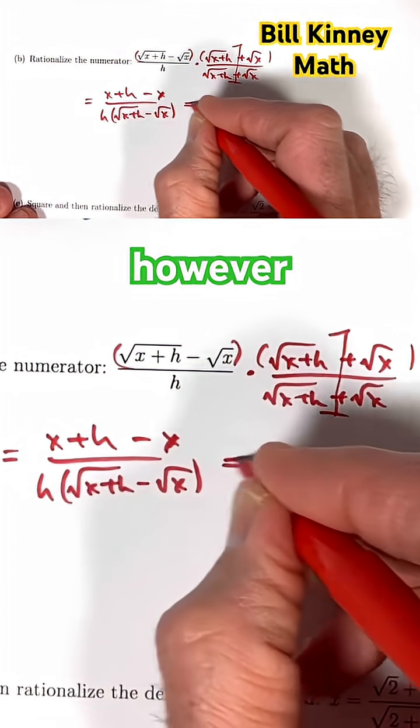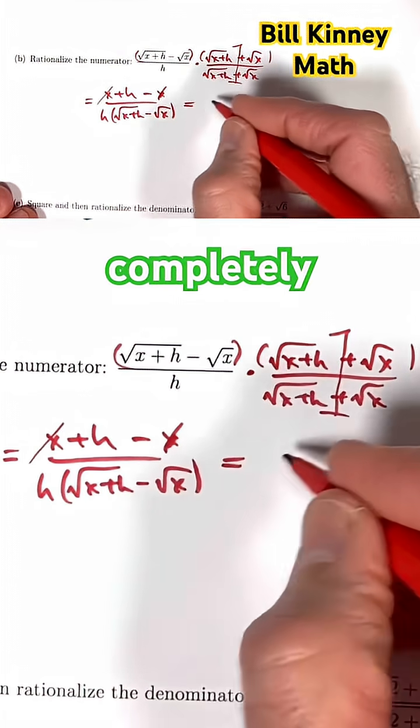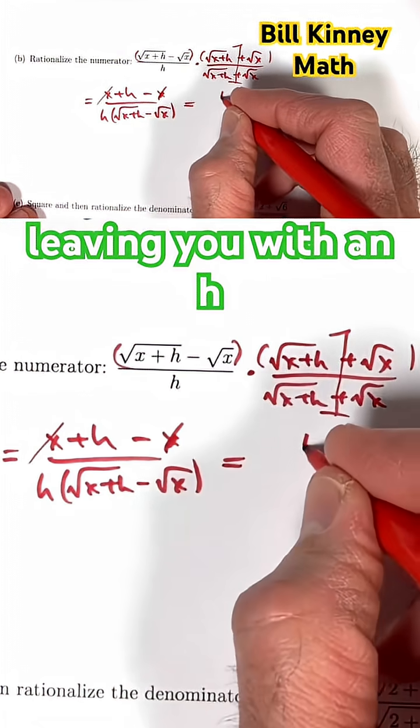This can be simplified further, however. The x's completely cancel. x minus x is zero, leaving you with an h.